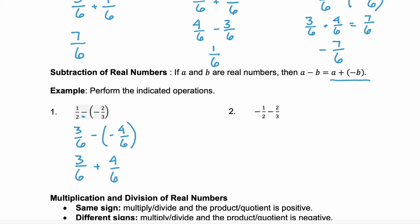So you see how these two negative signs, the subtraction and the opposite, convert to addition. And this simplifies to 7/6.